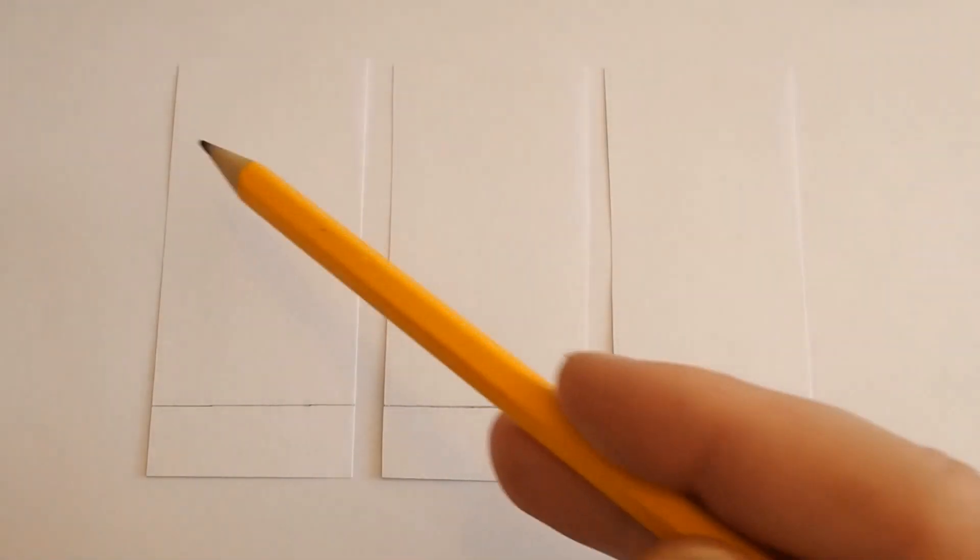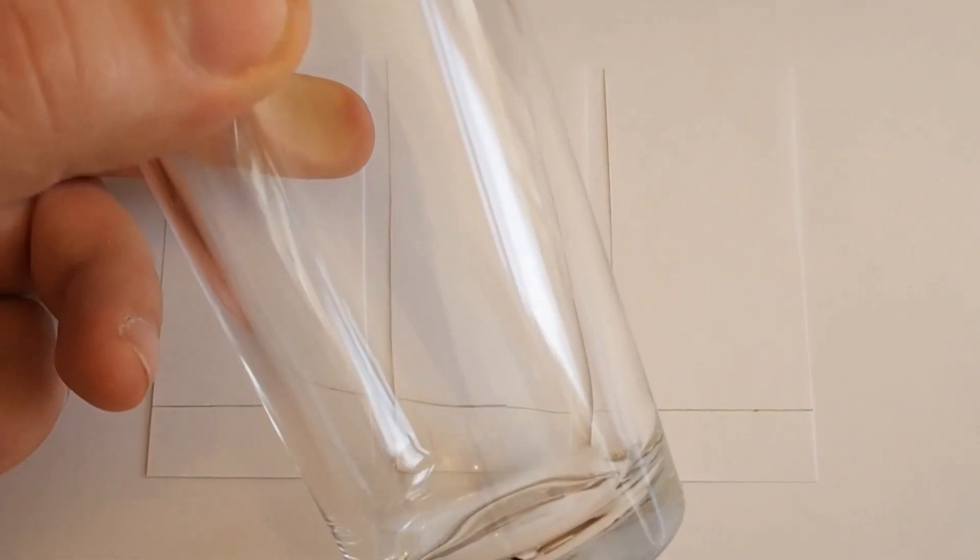Now firstly, we want a little piece of paper that is a nice rectangle and I've done a ruler line along here because what we're going to do is put our sample, our mixtures on this line and then we're going to place it in a glass just like this one with a little bit of solvent, a little bit of liquid at the bottom.